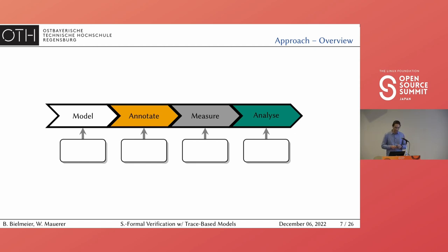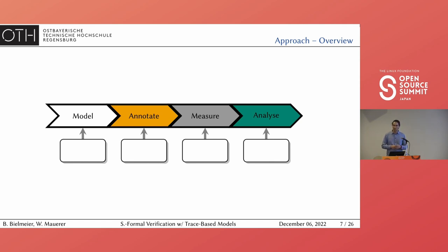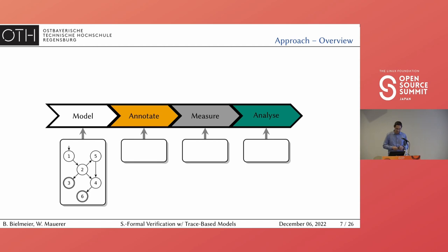To achieve data gathering, we need some kind of system instrumentation — that is what the annotation step is about. We use that instrumentation to gather data in a real-world production context, extend the model, and eventually derive statements about properties of the system. We use deterministic finite automata as the modeling type — you might also know them as state machines. Deterministic finite automata and state machines, tomato/tomato — it doesn't really matter how you call them.